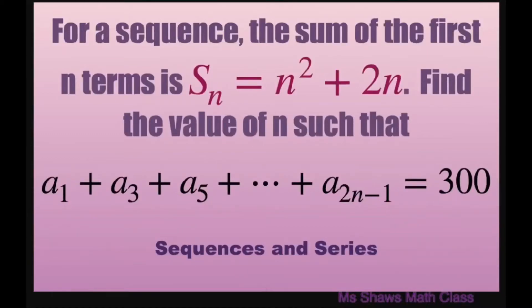Hi everyone! For a sequence, the sum of the first n terms is n squared plus 2n. We're going to find the value of n such that our sequence sum equals 300.